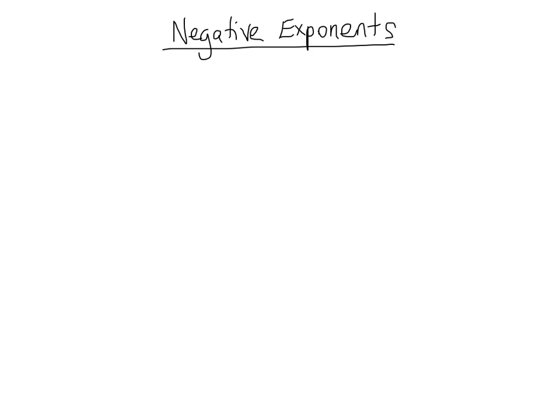Negative exponents are slightly more tricky, but they're not so bad. So let's go over the rule and then talk about why it works. If we have any number a and we raise it to a negative exponent, in order to make the exponent positive we have to move it from either the numerator to the denominator or the denominator to the numerator. Since we don't see a numerator or denominator, we can stick one in there — it's just over one. We bring it down, and once we bring it down, the sign of the exponent changes. So this is equal to one over a to the positive n.